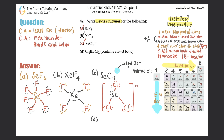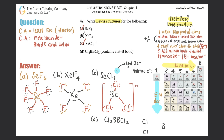Part D: Cl₂BBCl₂. This looks symmetrical and they tell us it contains a B-B single bond, so two chlorines are bound to boron, bound to another boron, bound to two more chlorines. Write that out: two chlorines bound to boron, bound to boron, and two chlorines - as symmetrical as possible. Now draw valence electrons: boron has three and chlorine has seven, so draw three dots around each boron and seven around each chlorine.